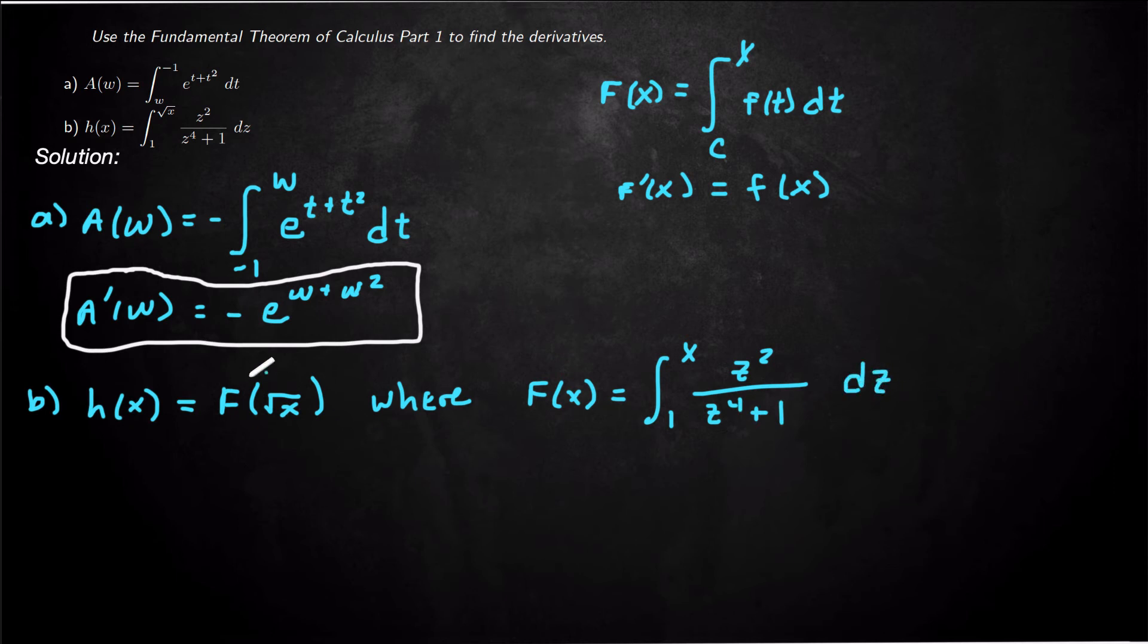So we actually have a composition going on here. So h prime of x would be, by the chain rule, F prime of square root of x times the derivative of square root of x.